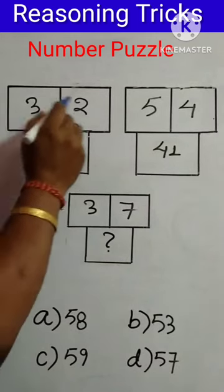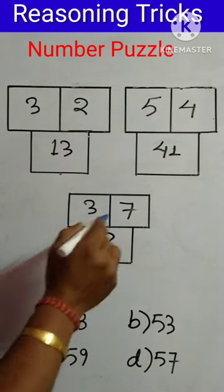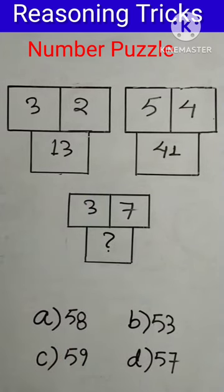In this number puzzle, the first figure has 3, 2, and 13. The second figure has 5, 4, and 41. In the third figure, we have 3 and 7, and we need to find the missing number. Four options are given.